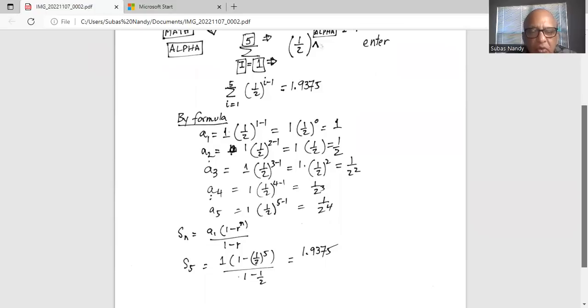So S5 is equal to 1 multiplied by 1 minus the common ratio, which is half, raised to the power of 5. The whole thing divided by 1 minus R or 1 minus half. And if we do the math correctly, it also works out to 1.9375.